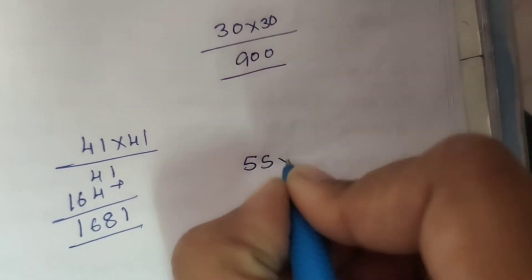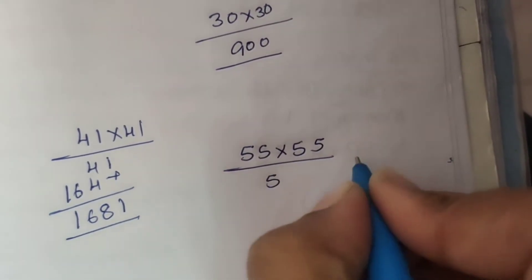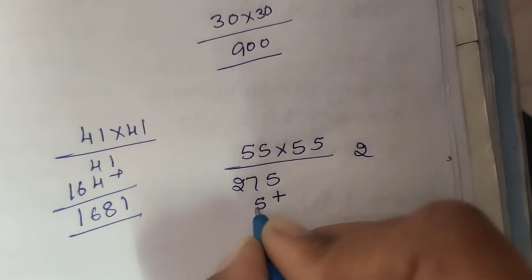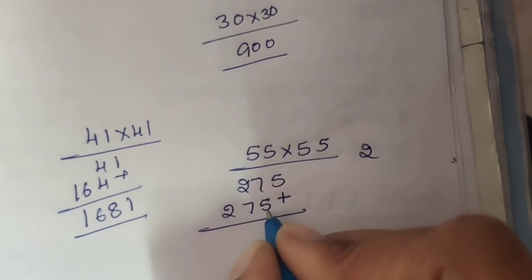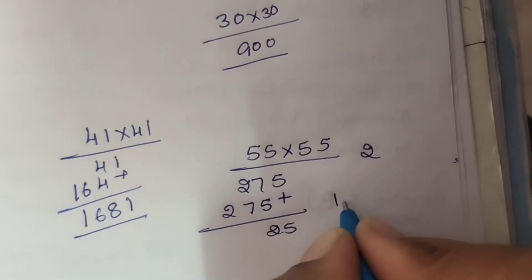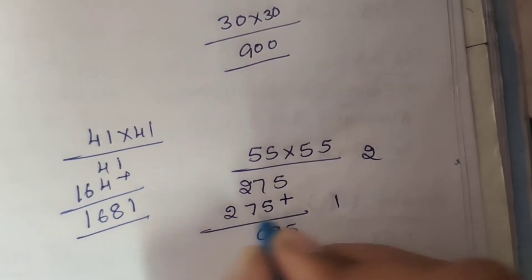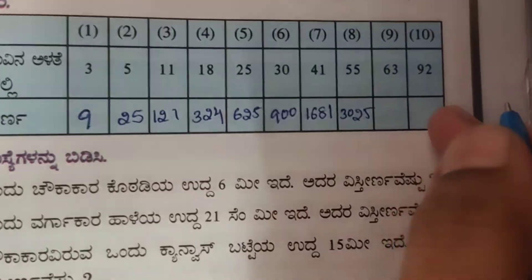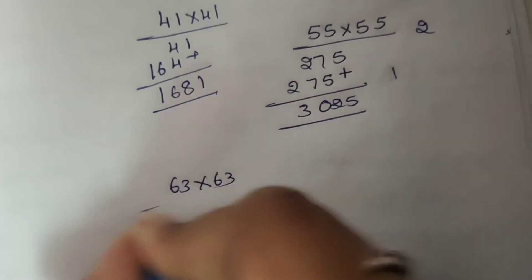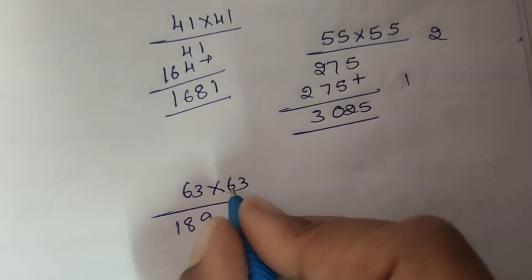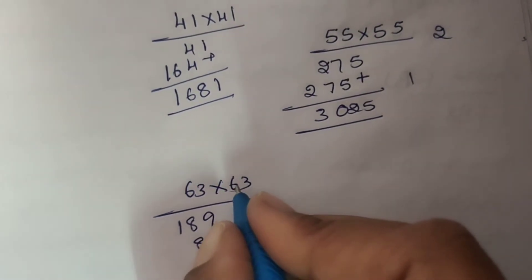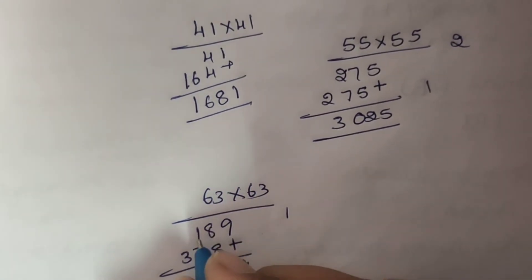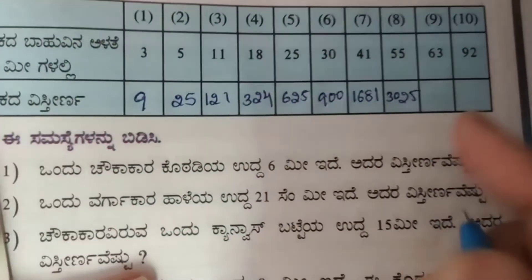For side 55: 55 into 55. 5 fives are 25, carry 2. 5 fives are 25, 25 plus 2 is 27. 7 plus 5 is 12, carry 1. 2 plus 1 is 3, 3 plus 7 is 10, carry 1. 2 plus 1 is 3. Result: 3025. Next result: 3969.